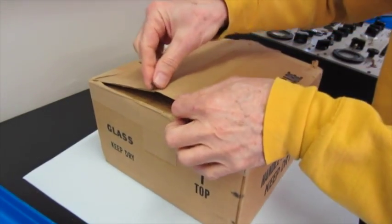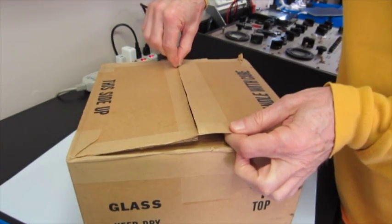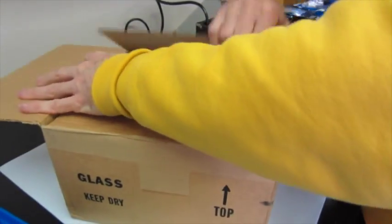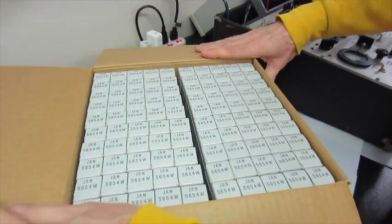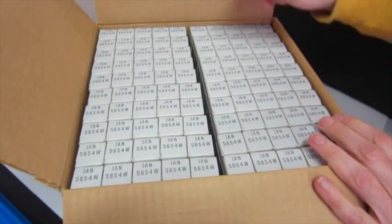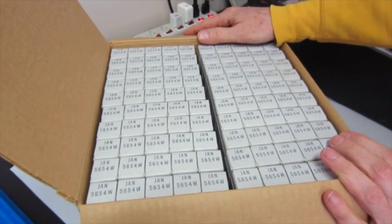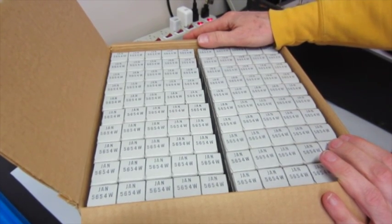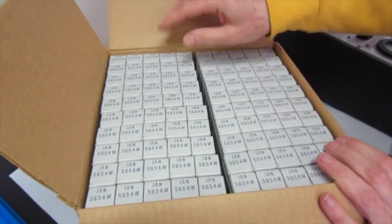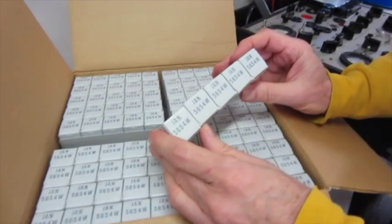These have been sealed since 1988. They're getting harder and harder to come by now in sealed boxes. So we've got in this particular box 200 of the 5654W, which is the ruggedized military version of a 5654. It's a great substitute for a 6J1 tube in a headphone amp or preamp or audio amplifier. And also a very good substitute or upgrade for 6AK5s.